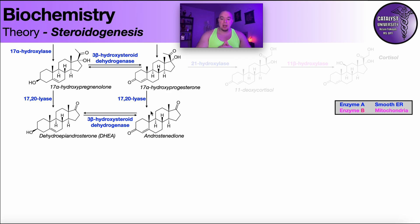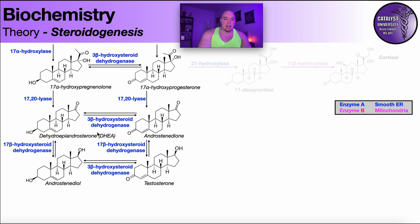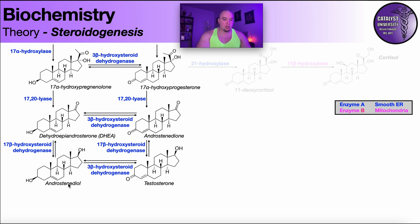The first sex steroid to be created is testosterone. If we take DHEA and react it with 17-beta-hydroxysteroid dehydrogenase, it converts the carbonyl into a hydroxyl group. Similarly, reacting androstenedione with 17-beta-hydroxysteroid dehydrogenase reduces that carbonyl to a hydroxyl group, giving us testosterone. Reacting 17-beta-hydroxysteroid dehydrogenase with DHEA gives androstenedione, which can then be converted to testosterone via 3-beta-hydroxysteroid dehydrogenase.